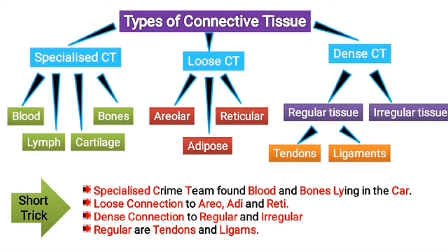There are three types of connective tissue: specialized connective tissue, loose connective tissue, and dense connective tissue. There are four types of specialized connective tissue: blood, bones, lymph, and cartilage. Among these, blood and lymph are liquid connective tissue. For loose connective tissue, we have areolar, reticular, and adipose.